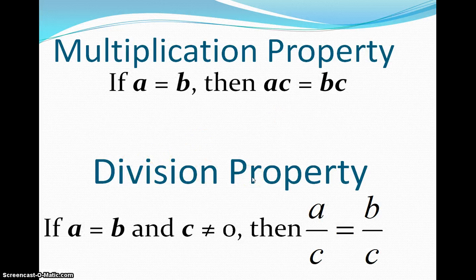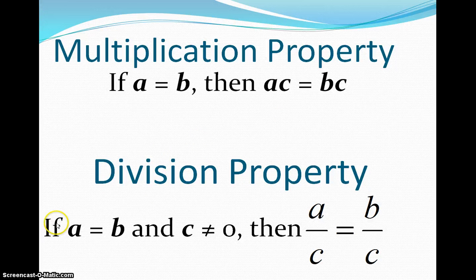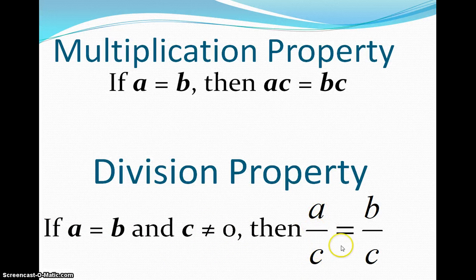Division property is pretty much the same exact thing except for just one extra step in there. If A is equal to B, and we know that C can't equal zero, then we know that I can divide both A and B, both sides, by C.